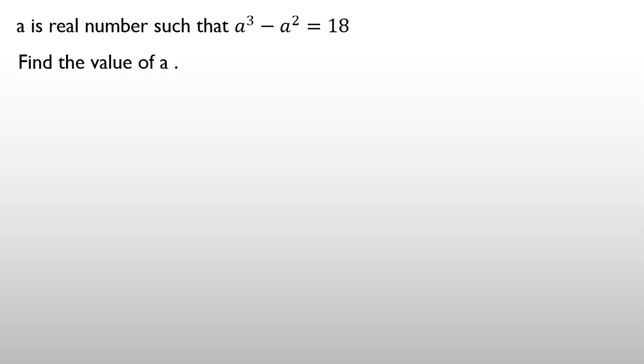Okay, a cubed minus a squared, and this is a real number. When you have this, take all things to one side. So a cubed minus a squared is 18. You take 18 to the left-hand side, or we can say subtract 18 from both sides. It will be a cubed minus a squared minus 18 equal to 0.